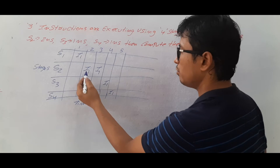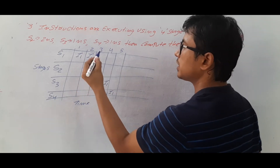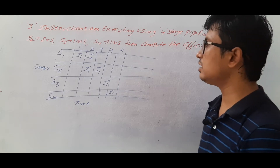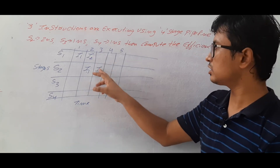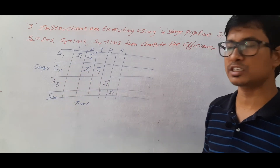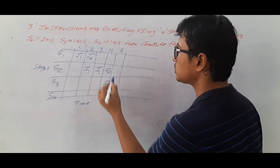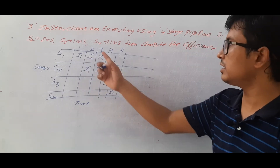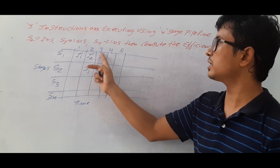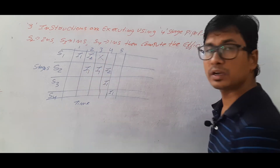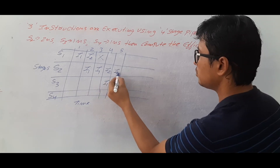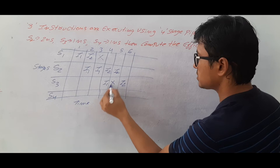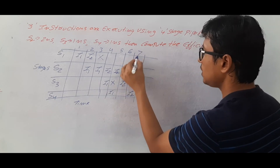Once instruction one moves to stage two, stage one is free and instruction two can utilize it. However, instruction two can only move to stage two when stage two is free. At the third nanosecond, stage two is still busy with instruction one. So instruction two enters stage two later, and that waiting period is a stall cycle — the stage one slot is unutilized. Instruction two then takes two nanoseconds in stage two, followed by one nanosecond each in stages three and four.